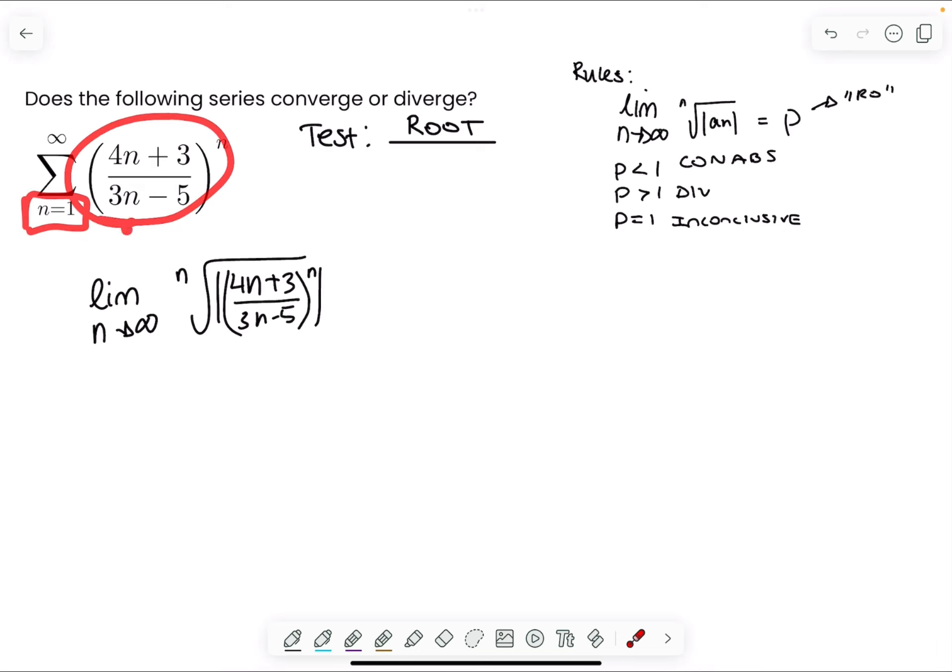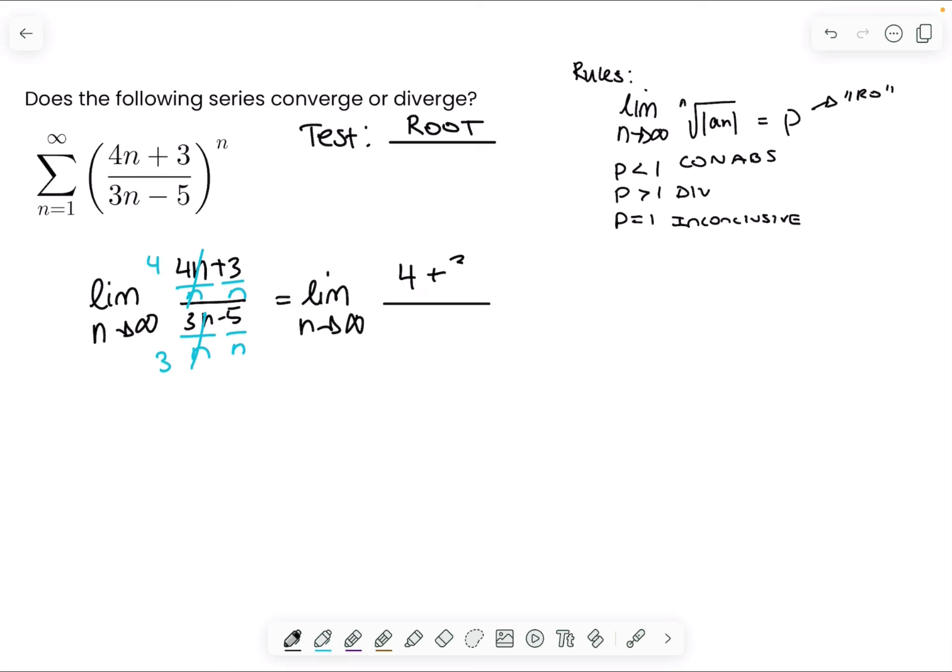This is a rational fraction, so I can divide every term by the term with the largest power in the denominator, which is n to the first power. This cancels out to be 4, this cancels out to be 3. We'll have 4 plus 3 over n, 3 minus 5 over n.